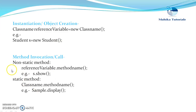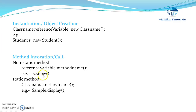Now how to invoke a method of a class outside that class. A method can either be a non-static method or a static method. If it is a non-static method, we need to call it with the reference variable — the syntax is: reference variable dot method name. So if I have a reference variable 'is', I can invoke a method by giving 'is.show', which will call the show method from the class for which the reference variable 'is' points.